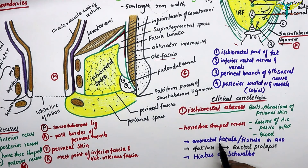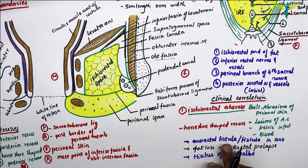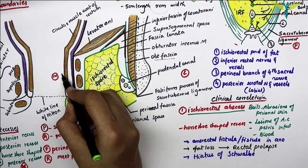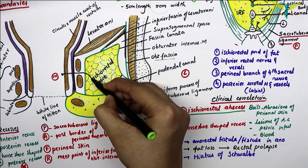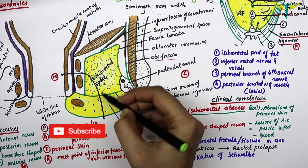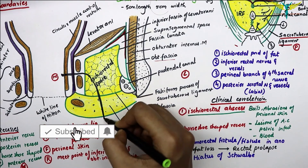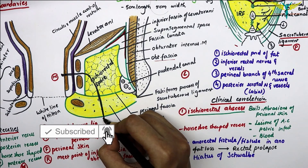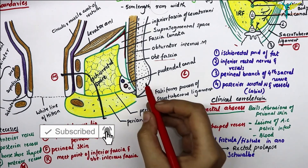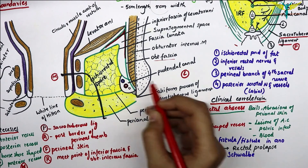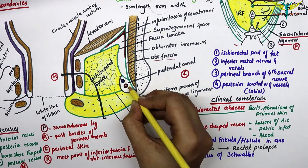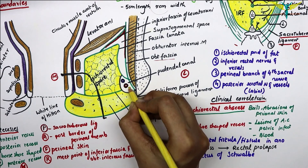The anorectal fistula, because of its common appearance — let's see the track of the fistula. It arises from within the anal canal and tracks through like this. The pudendal canal contains a pudendal vein, a pudendal artery, and a pudendal nerve.